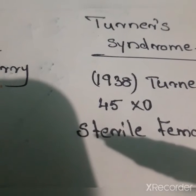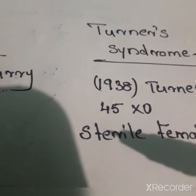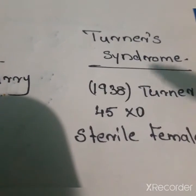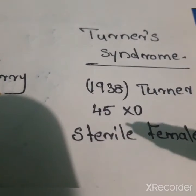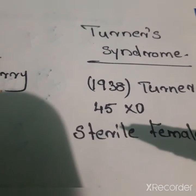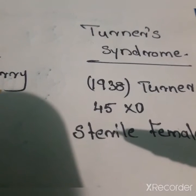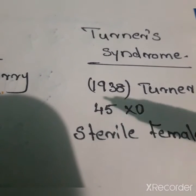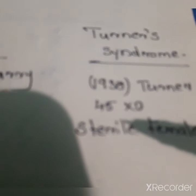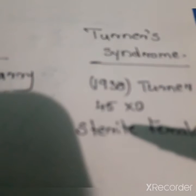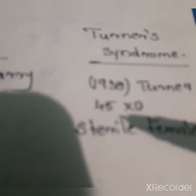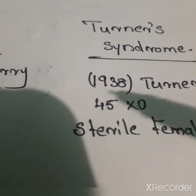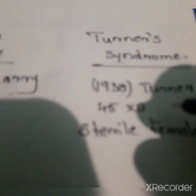In Turner's syndrome, this condition mainly affects females. One X chromosome is absent, so the total number of chromosomes is 45. The absence of one X chromosome leads to Turner's syndrome.